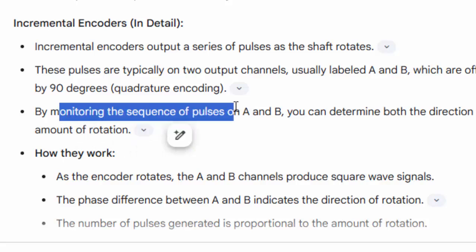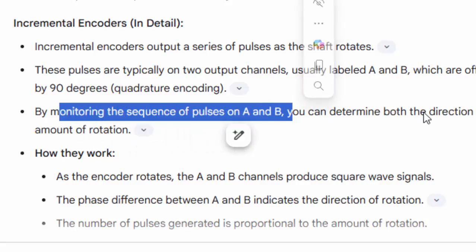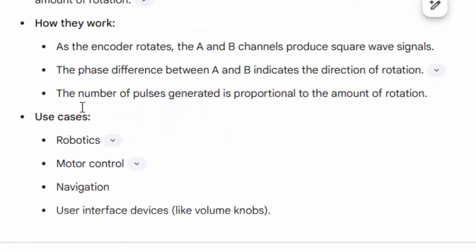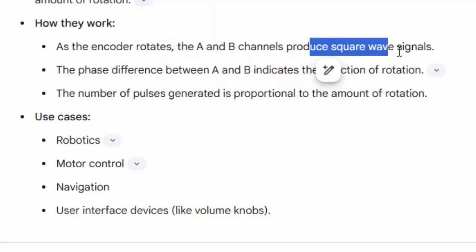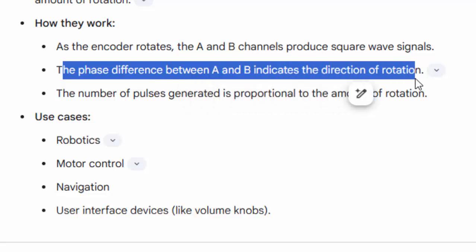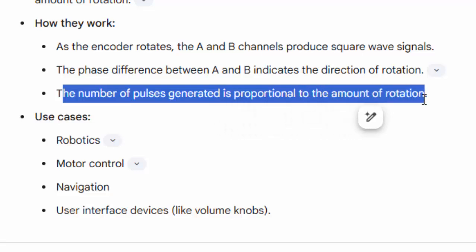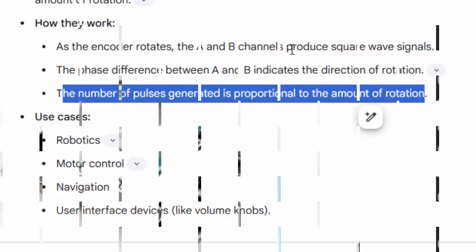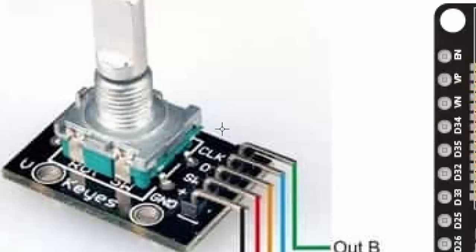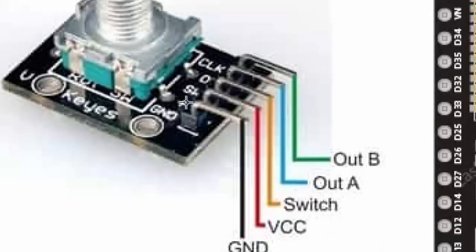By monitoring the sequence of pulses on A and B, you can determine both the direction and amount of rotation. As the encoder rotates, the A and B channels produce square wave signals, and the phase difference between A and B indicates the direction of rotation. The number of pulses generated is proportional to the amount of rotation, so that's how you can keep track of how much the shaft has rotated.